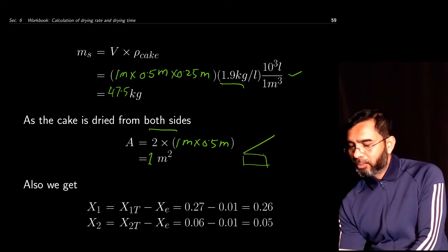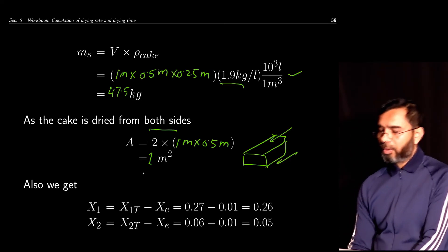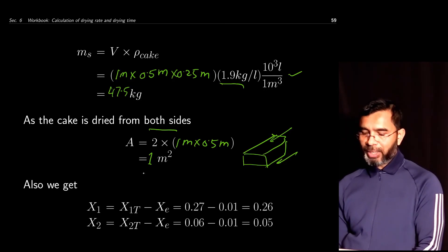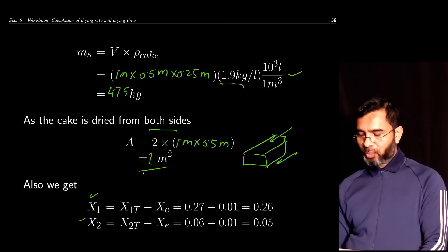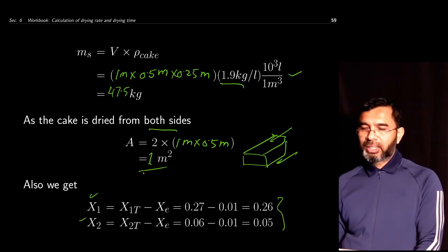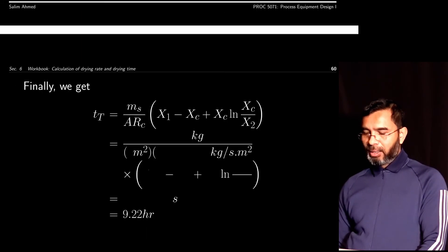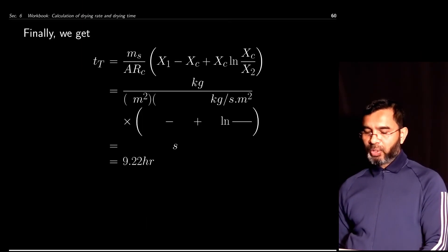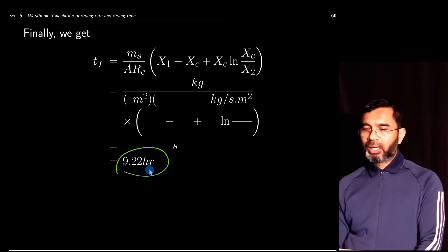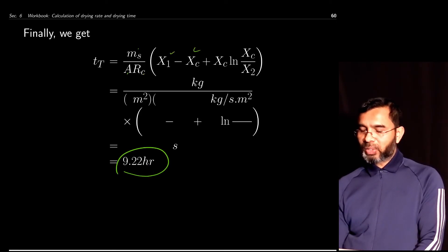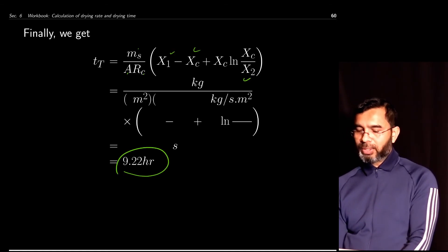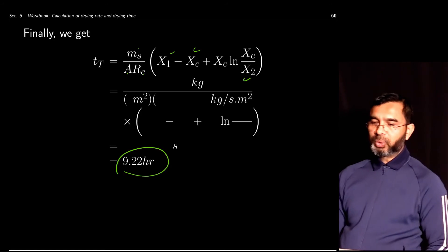Air is blown from the top and bottom sides of the cake, giving a total area of 1 m². Converting X1, Xc, and X2 to free moisture values and plugging everything — Ms = 47.5 kg, A = 1 m², Rc = 328 × 10⁻⁶ kg/(s·m²), X1, Xc, and X2 — into the drying time equation gives a total drying time of 9.22 hours.